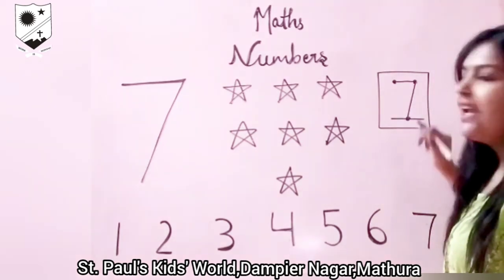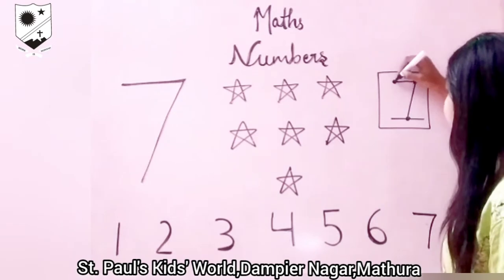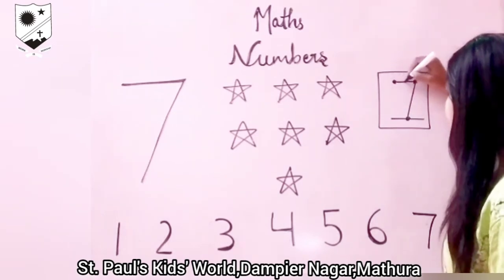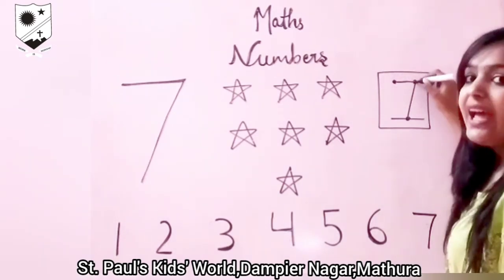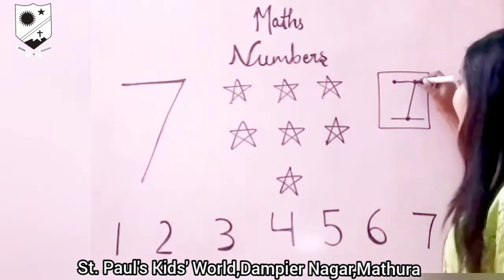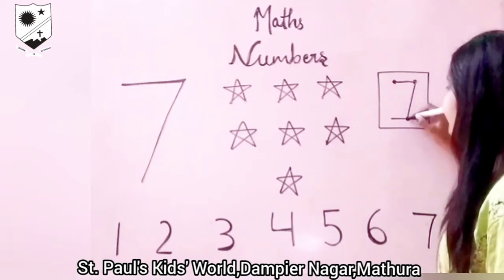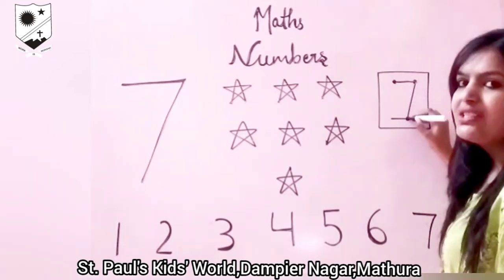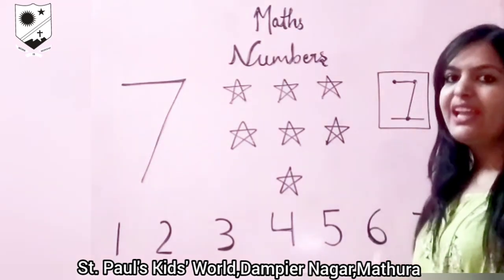drag it downwards and connect it with the dot which is on the baseline. We will see again. Make a small sleeping line connecting these two dots and a slanting line connecting these two dots. This is how we make number 7.